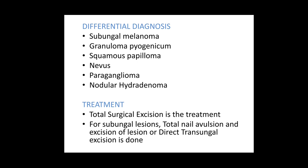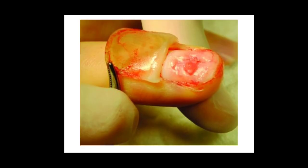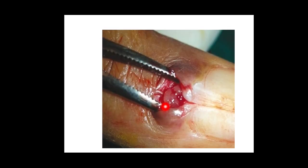The treatment is total surgical excision. For lesions under the nail, we have the option of avulsing the entire nail and then excising the lesion, or performing a direct transungual excision through the nail. You can see here the nail avulsion and the lesion, and this is the transungual approach — a direct cut through the nail to excise the lesion.